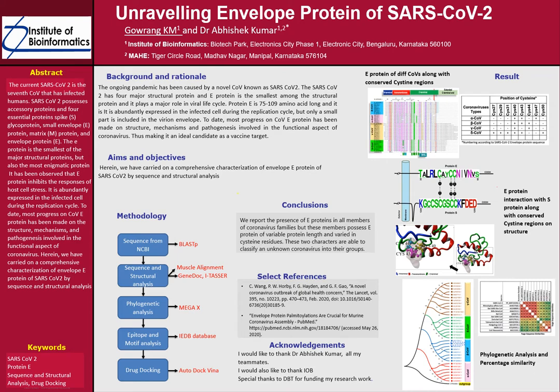Protein E is 75 to 109 amino acids long and is abundantly expressed in the cell during the replication cycle, but only a small part of it is included in the viral envelope. Since it plays a major role in the viral life cycle, it is an ideal candidate as a vaccine target.